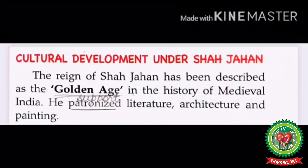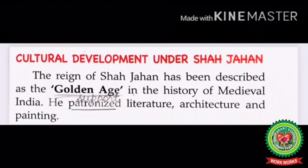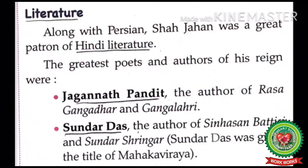Students, take note from page number 105 — cultural developments under Shah Jahan. The reign of Shah Jahan has been described as the golden age in the history of medieval India. He patronized literature, architecture, and painting. By the word patronized, we mean support — it means Shah Jahan supported literature, architecture, and paintings.